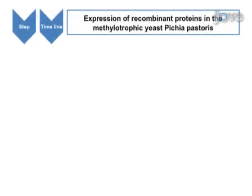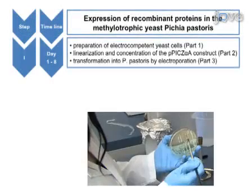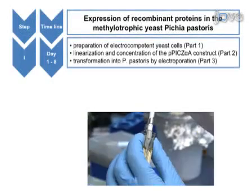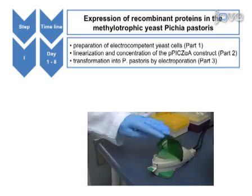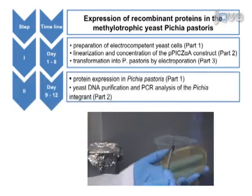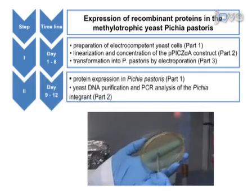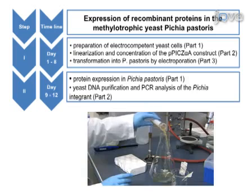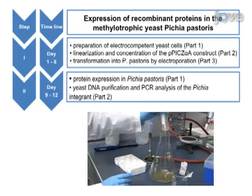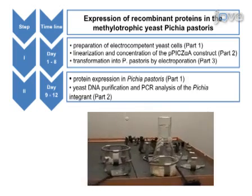The following protocol describes protein expression using the methylotrophic yeast Pichia pastoris. The preparation of electrocompetent yeast cells and transformation of the vector with the gene of interest into P. pastoris are shown, followed by a yeast DNA purification step to check for proper integration of your gene of interest into the yeast genome. At the end, we will perform the expression of the recombinant protein.